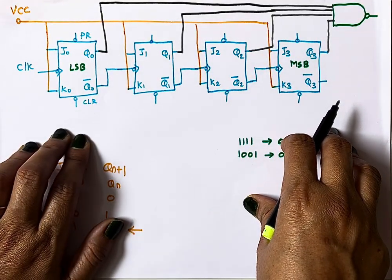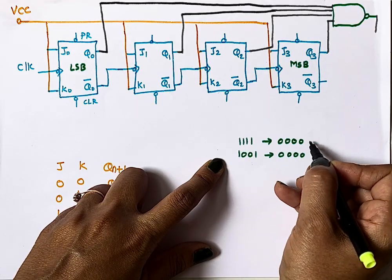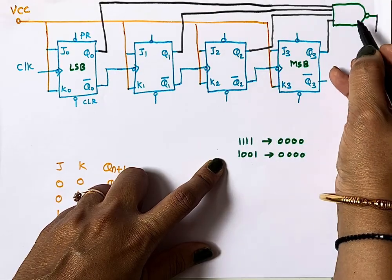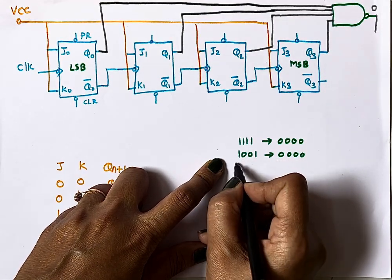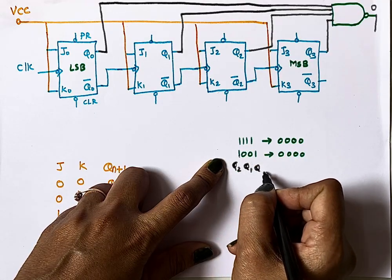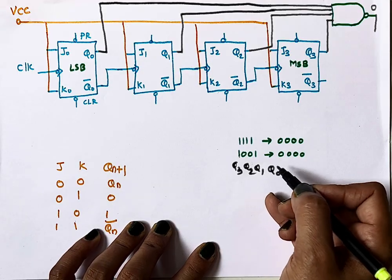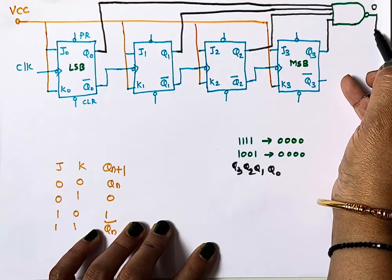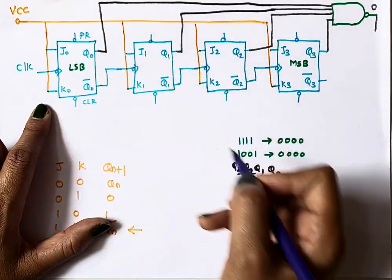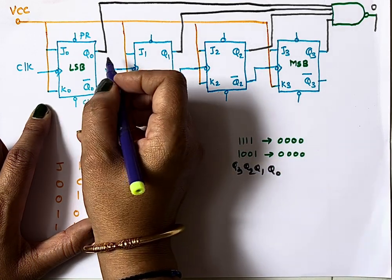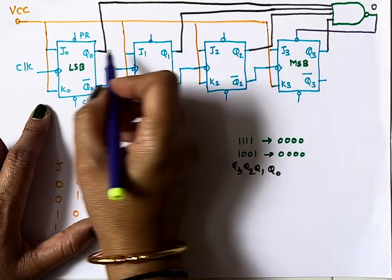When the output tries to become 1111 after 0000, the NAND gate — with all four inputs at 1 — generates output 0. We want the counter to reset to 1001 (decimal 9), meaning Q3=1, Q2=0, Q1=0, Q0=1. So the NAND gate output is connected to the preset inputs of Q3 and Q0, setting them to 1. The preset inputs of Q1 and Q2 are connected to VCC to disable them.